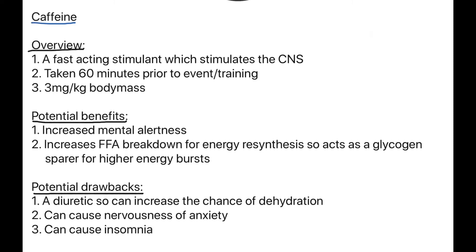This means you can spare your glycogen for the highest spurts of anaerobic sprinting. Potential drawbacks: caffeine is a diuretic, so it can increase the chance of dehydration. It can also cause nervousness and anxiety, which may actually impair performance — we'll look at this in the psychology part of the course.